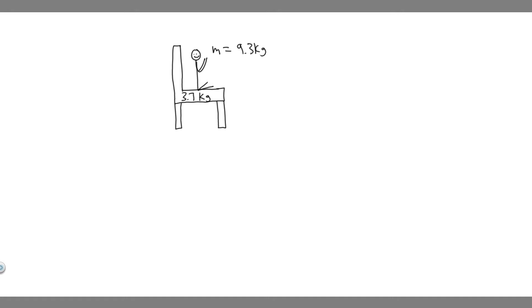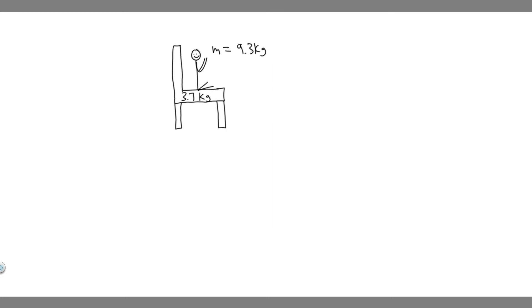I went ahead and drew the full thing, but for A and B we're going to be drawing two different free body diagrams for each of the components. For A, we're going to be focusing on the child, and for B, we're going to be focusing on the chair. So let's go ahead and start with A.